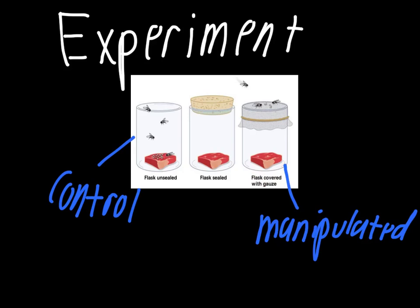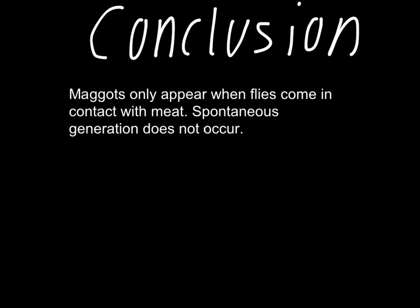His conclusion was that the unsealed flask grew maggots, while the flask with gauze on top and the one with the cork on top did not. This supports his idea that maggots come from flies, not from the meat itself. He concluded that maggots only appear when flies come in contact with meat, and that spontaneous generation does not occur — even though it was something many people at his time believed in.